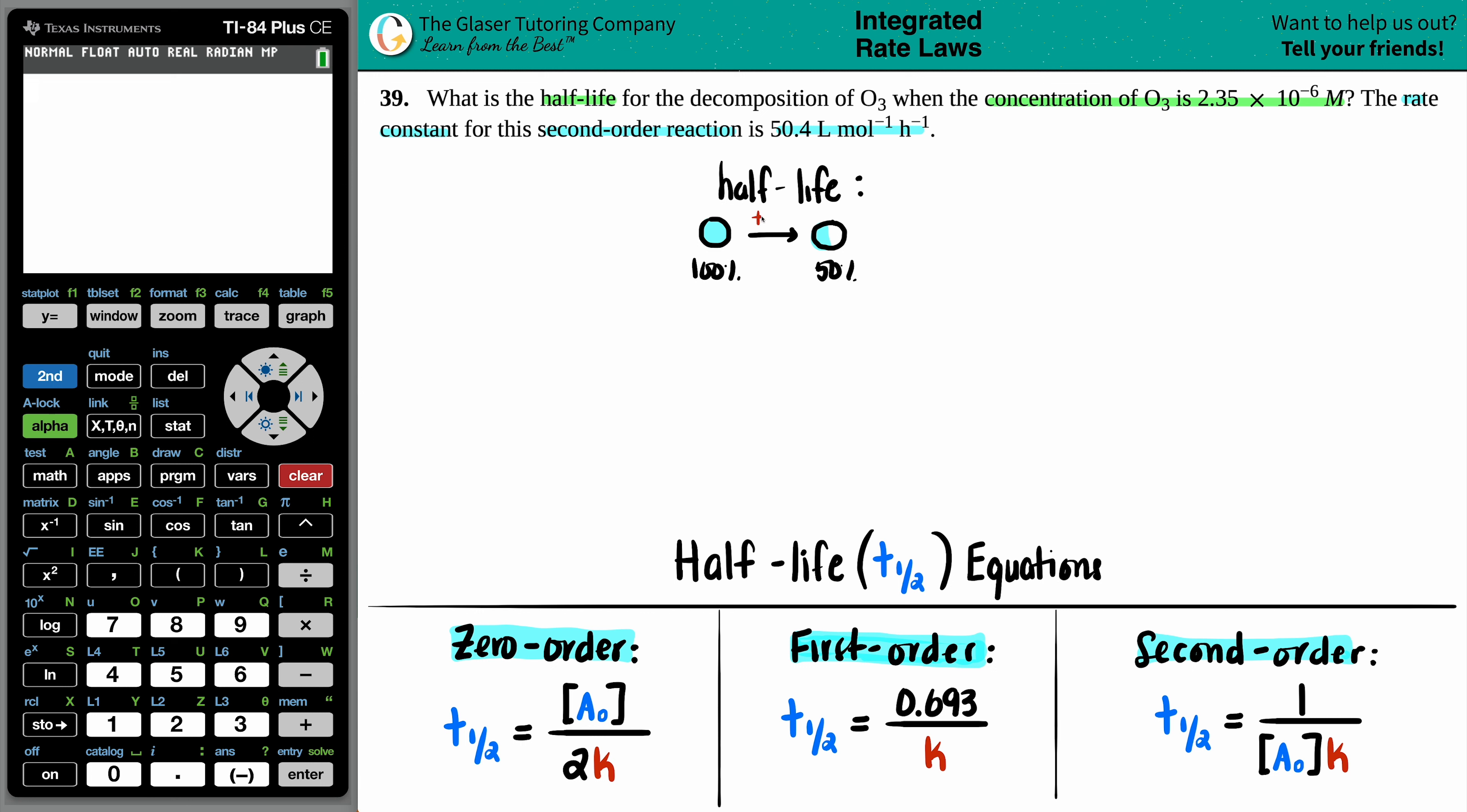So 100% down to 50%. As long as that decomposes, that's your half-life. And the half-life is denoted by this little t with a half as a subscript.